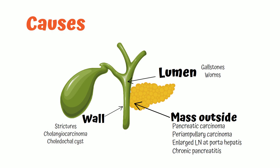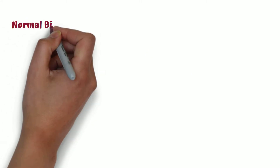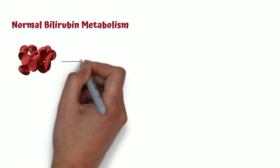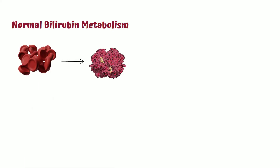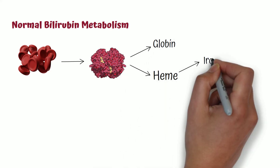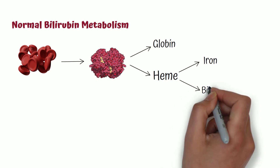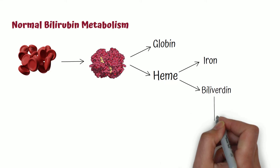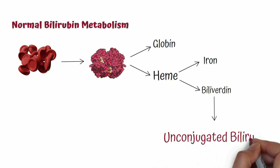Now let's look at the clinical features in a patient with obstructive jaundice. Before we go into the clinical features, let's look at normal bilirubin metabolism. When red blood cells break down, they release hemoglobin. Hemoglobin breaks down into heme and globin. Heme then breaks down into iron and biliverdin. Iron goes to the iron stores, and biliverdin is converted to unconjugated bilirubin.